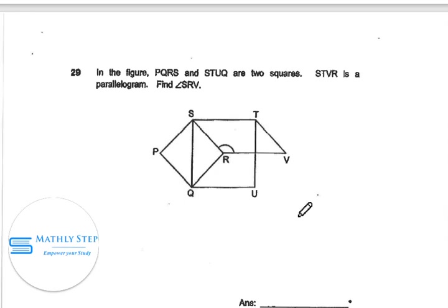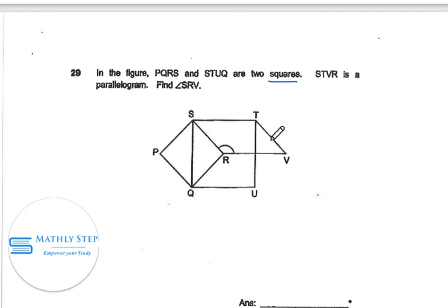Question 29. In the figure, PQRS and STUD are two squares, and STVR is a parallelogram. Find angle SRV.